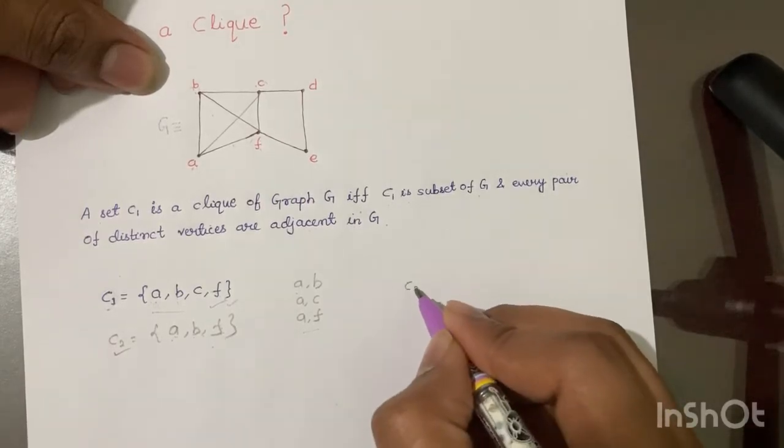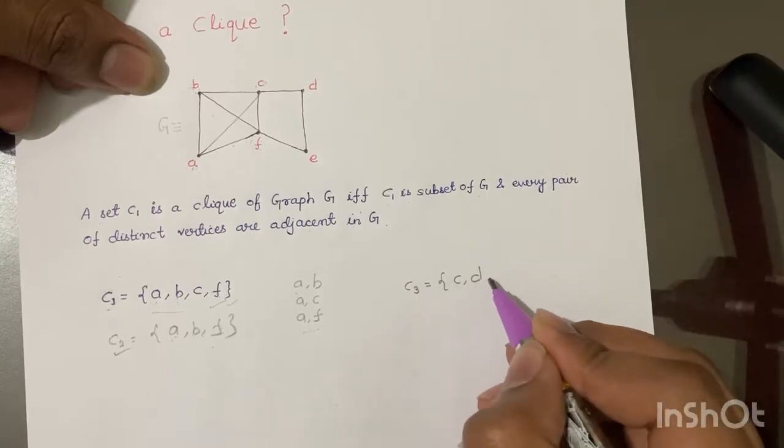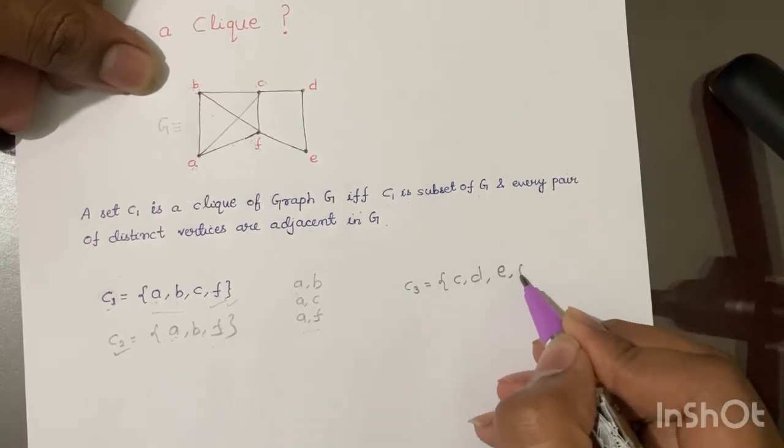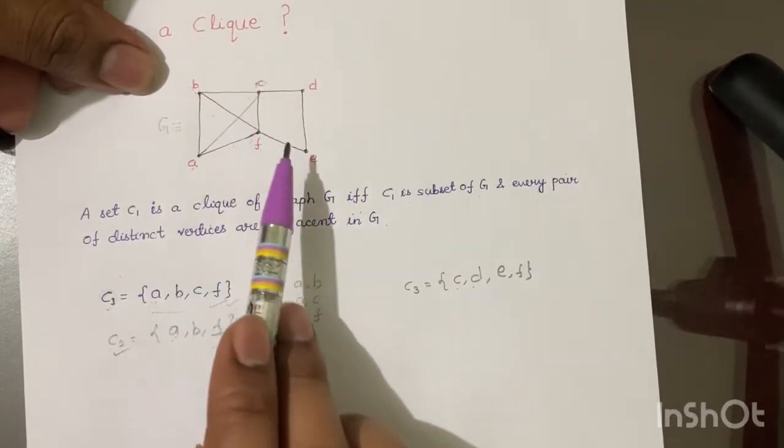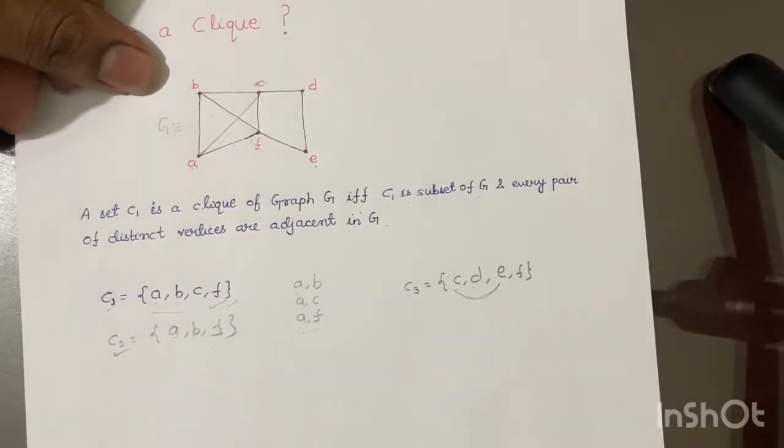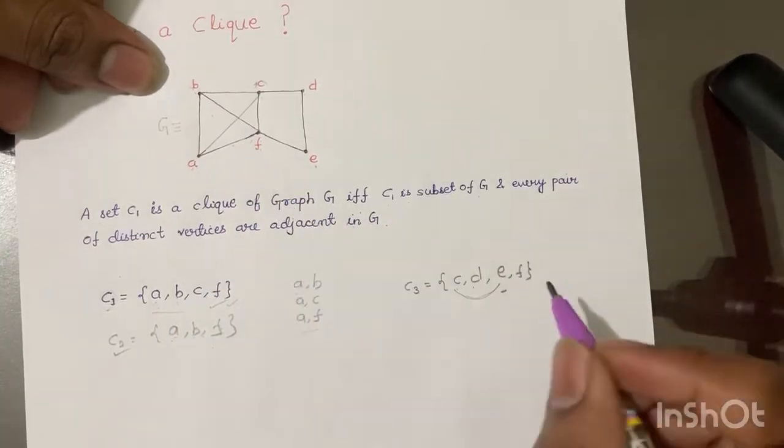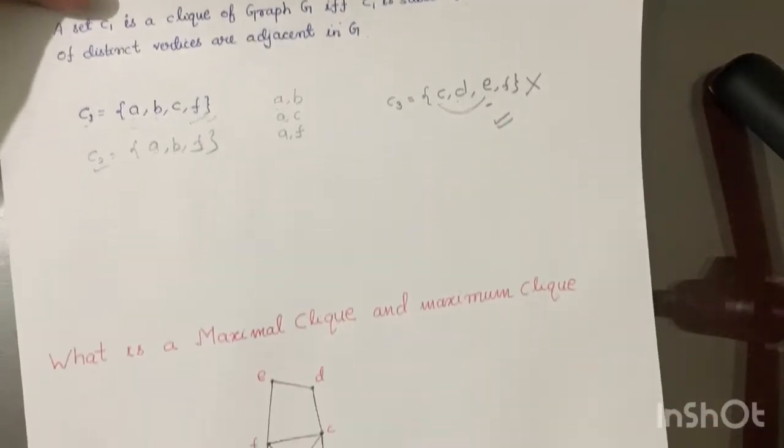Now let's say I write C3 as C, D, E, and F. Will it be called a clique? No. Why? C and D are adjacent, but when you look at C and E, they are not adjacent to each other. So this subset of G will not be called a clique. Now moving to the next question.